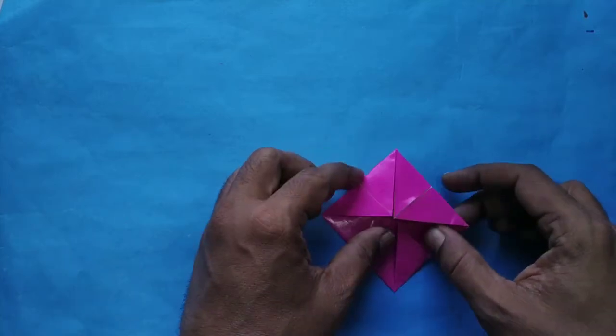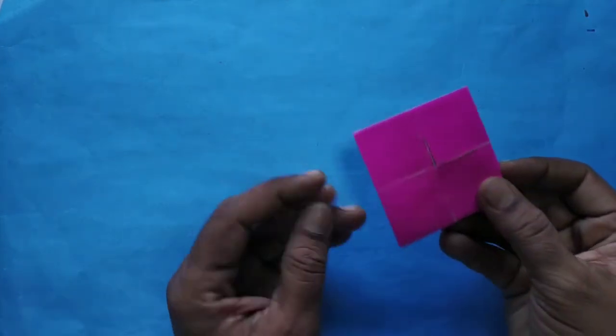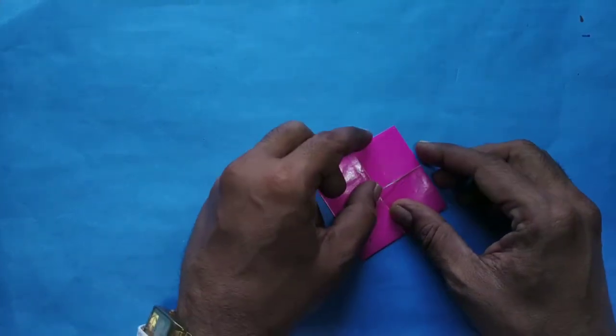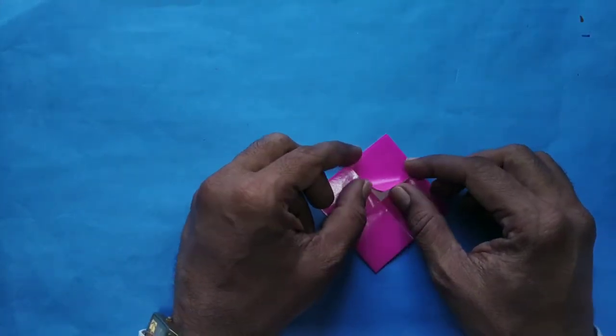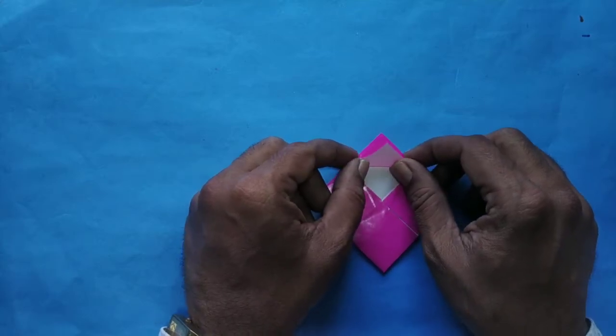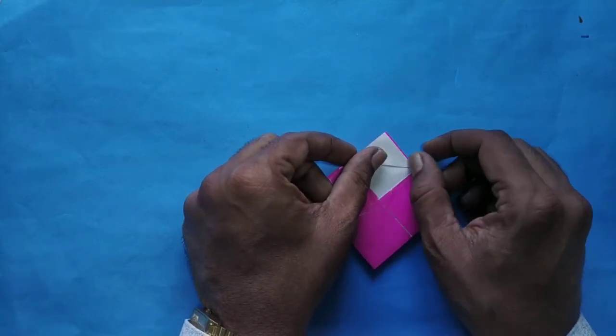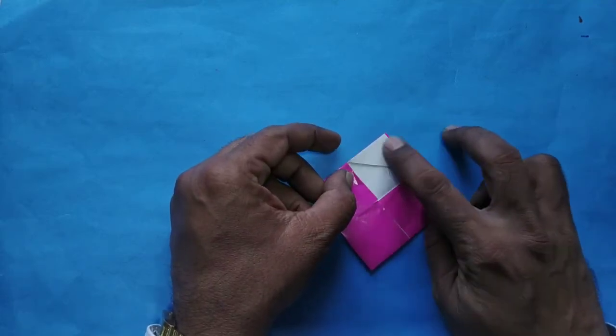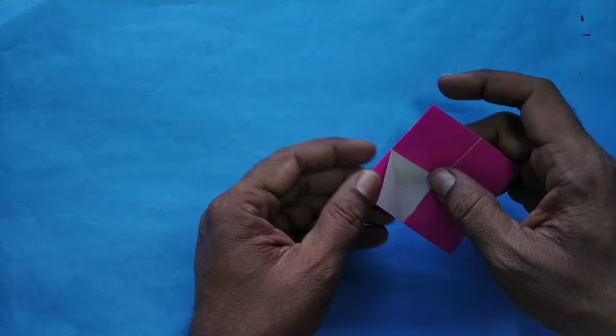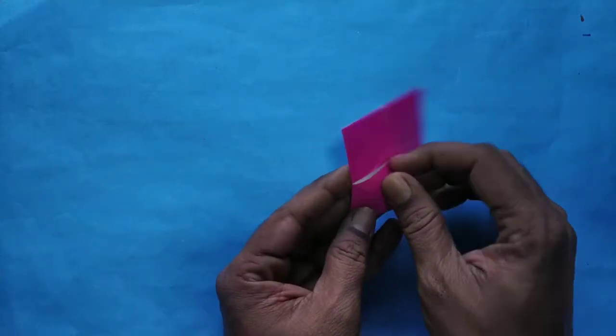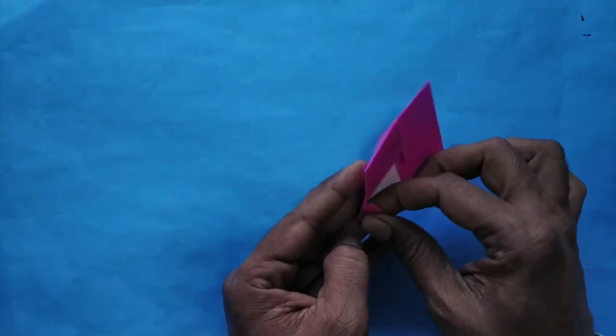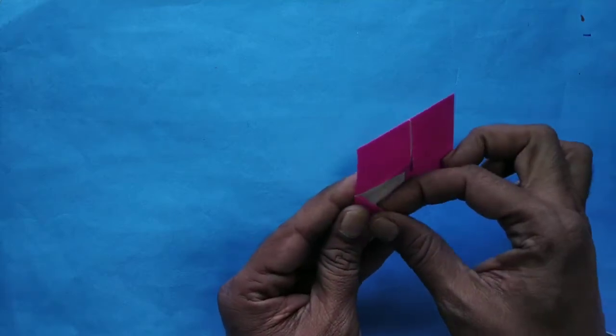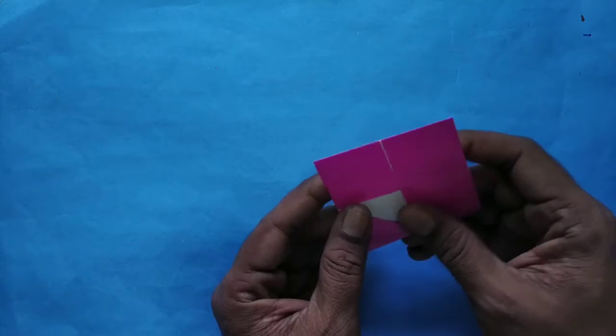Then turn it upside down. You'll get it like this. Then take one part of it and do the upper fold like this. Fold it properly, it goes inside underneath. Similarly you have to do all four sides.